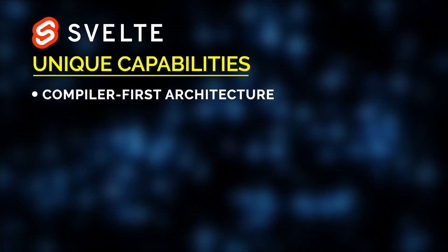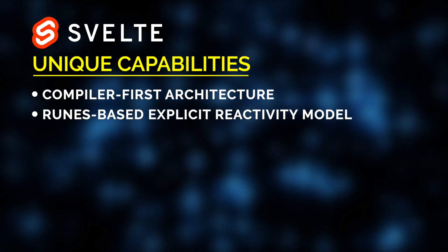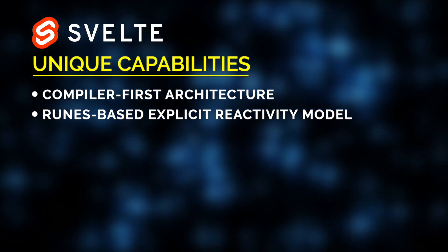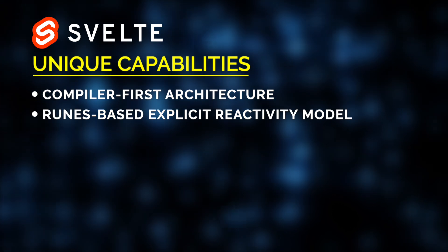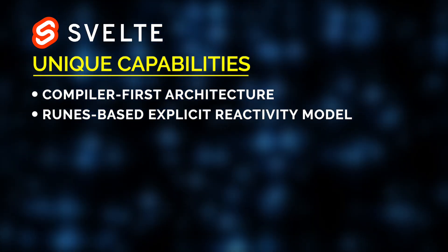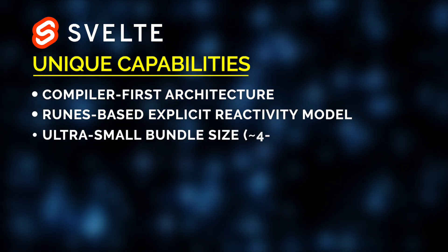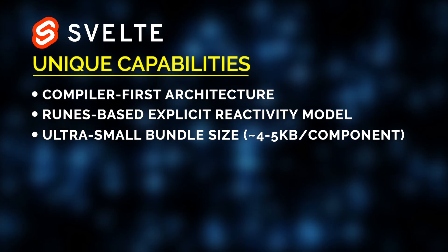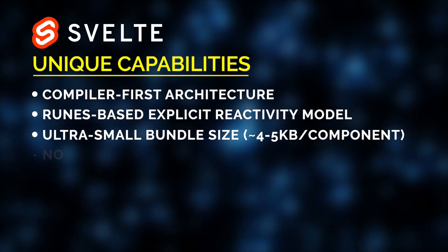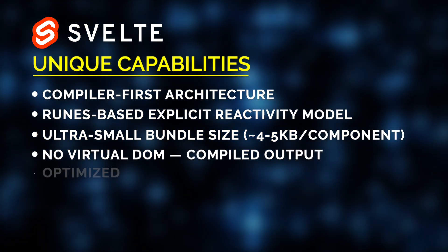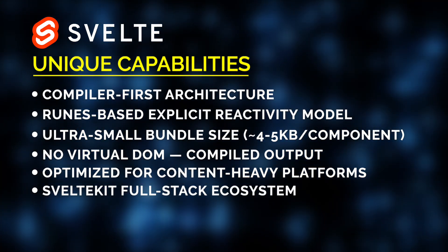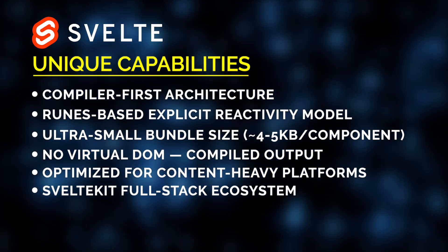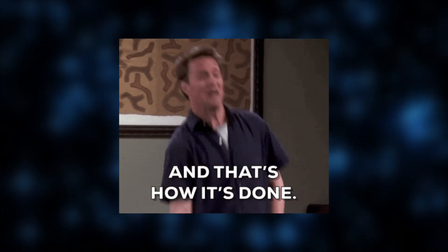What also makes Svelte 5 unique is its runes-based reactivity model, giving developers explicit, readable control over state management. Svelte delivers near-instant load times even on low-bandwidth mobile networks, thanks to its ultra-small bundle size — often just four to five kilobytes per component — and the absence of a virtual DOM. Topped with the evolving SvelteKit ecosystem featuring full-stack capabilities, Svelte 5 is more than just a front-end framework; it's a highly efficient platform for building modern web apps.